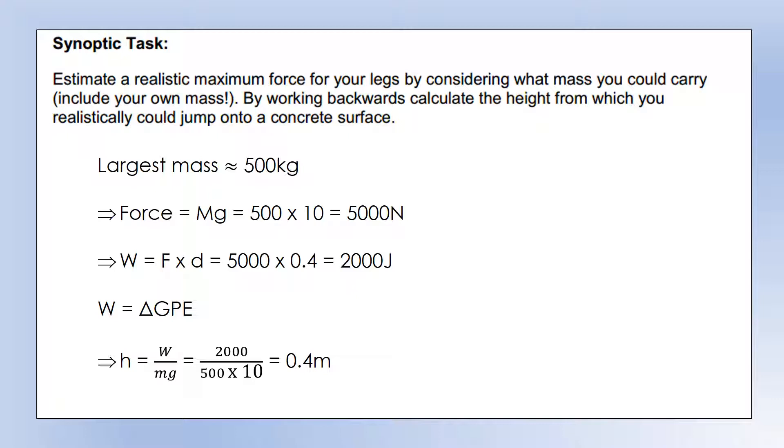So working backwards, if we say our stopping distance is 0.4, so I said it was 0.5 with a soft surface, so let's make it 0.4 with concrete, gives us the work we have to do.